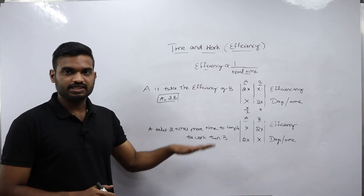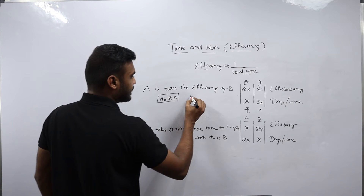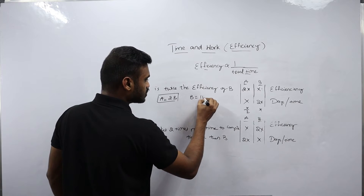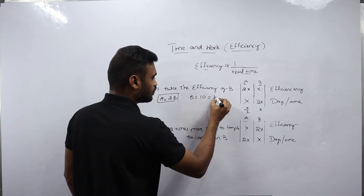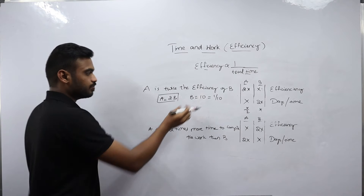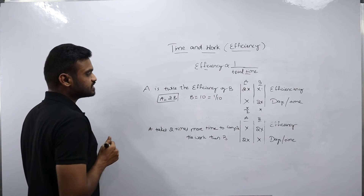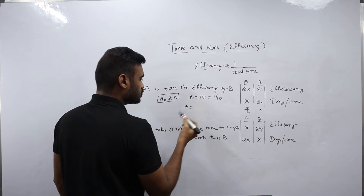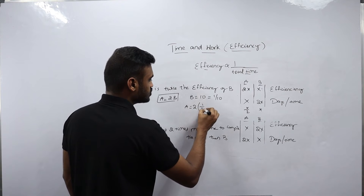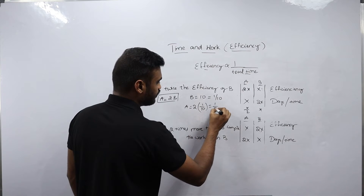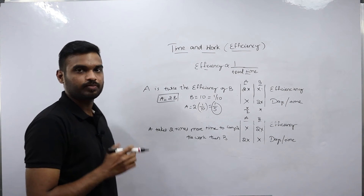Now I will explain these scenarios numerically. Suppose B takes 10 days to complete the work. Then B's efficiency or B's one day's work will become 1 by 10. We know A equals 2B in efficiency. So A's efficiency is 2 times 1/10, which is 1 by 5. This means A totally takes 5 days to complete the work. Substituting x equals 10 into the time formula x by 2, we get 10 by 2 equals 5 days — consistent.